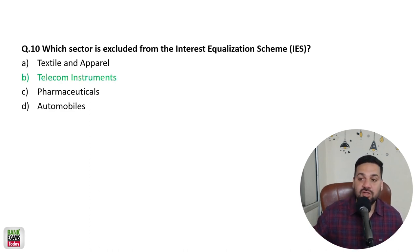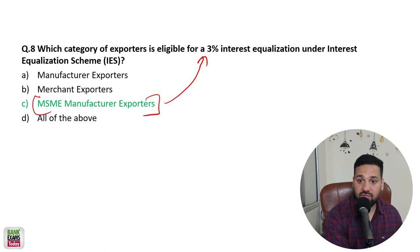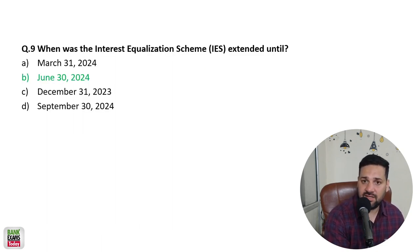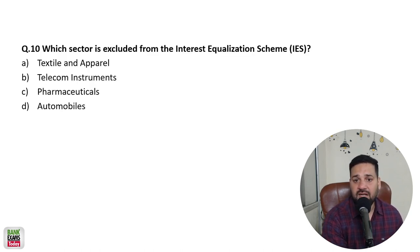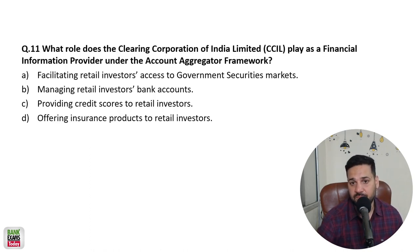The telecom instruments sector has been excluded from the Interest Equalization Scheme. For MSME manufacturer exporters, the rate is 3%; for other manufacturers, it is 2%. The Interest Equalization Scheme has been extended till 30th June 2024 and the telecom instrument sector has been excluded from this scheme.